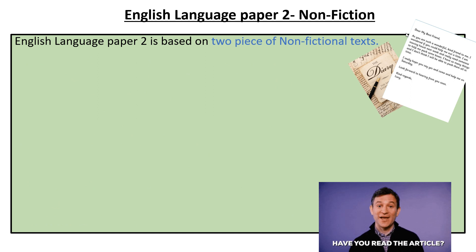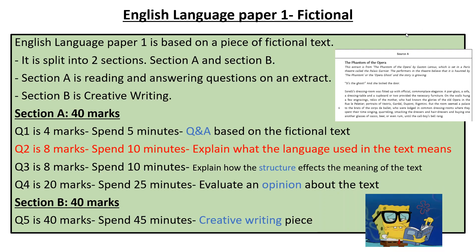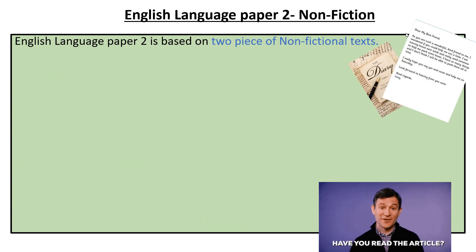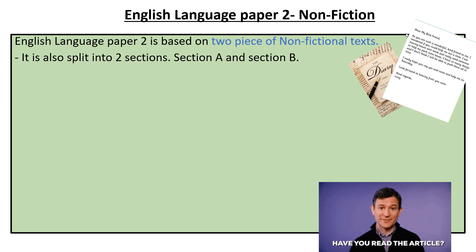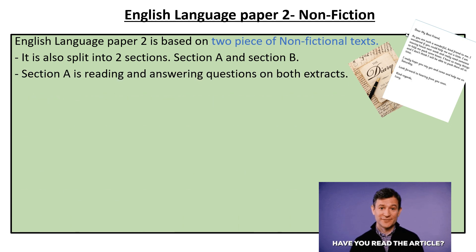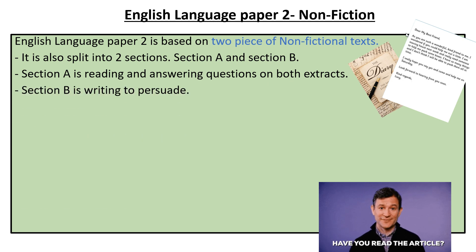English Language Paper 2, on the other hand, is non-fiction based. You get two pieces of non-fiction, whereas with Paper 1 you got one piece of fictional text. Just like Paper 1, it's split into two sections: Section A and Section B. Section A is reading and answering questions based on two extracts, and Section B is your non-fictional writing — writing to persuade.